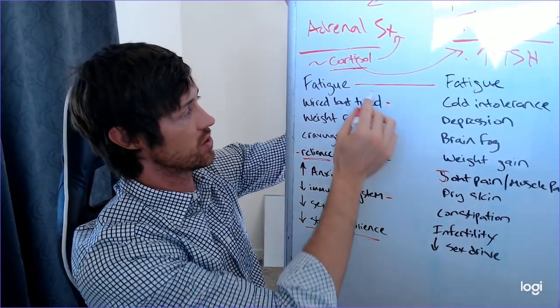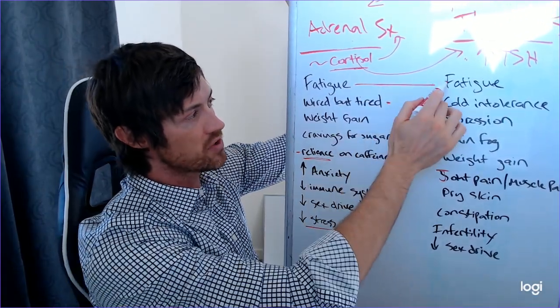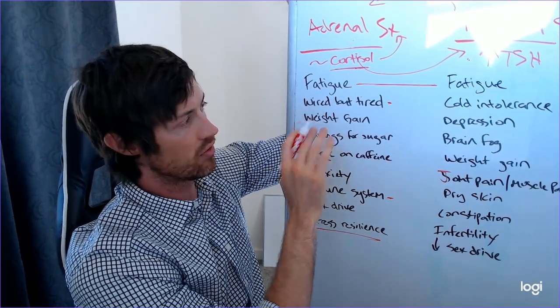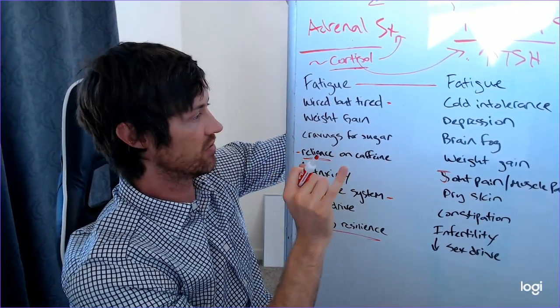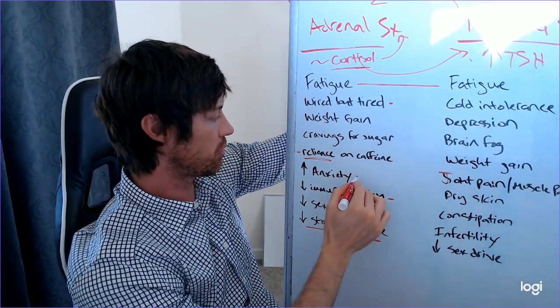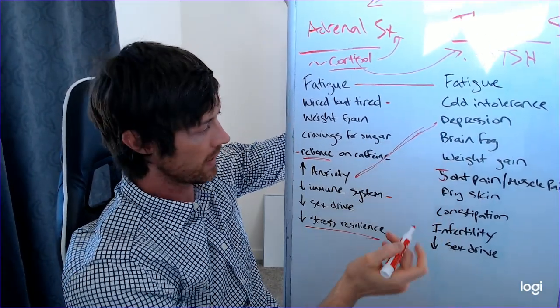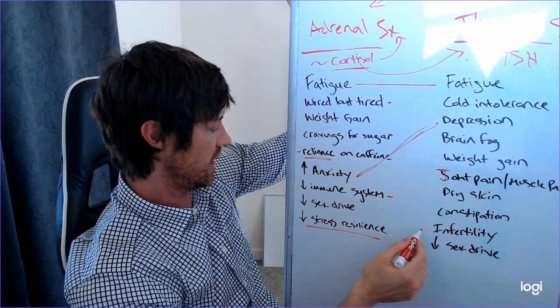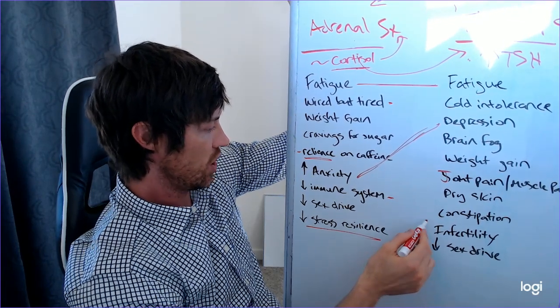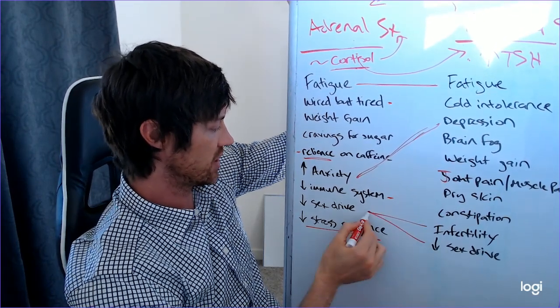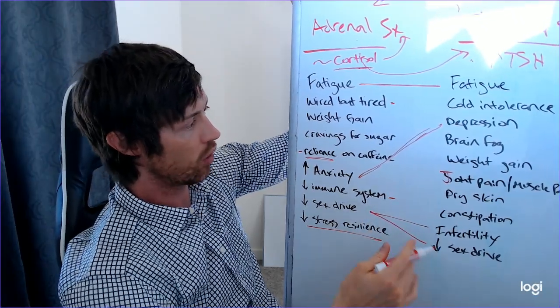So let's connect a couple of these. So we have fatigue on both ends, even though the fatigue over here is a little bit different than the fatigue over there. They can both cause low energy and fatigue. So instead of having depression, we have this, but we'll connect these because it causes mood problems. We have infertility here, which can kind of be confused with decreased sex drive. And we also have decreased sex drive over here. So there's some overlap here.